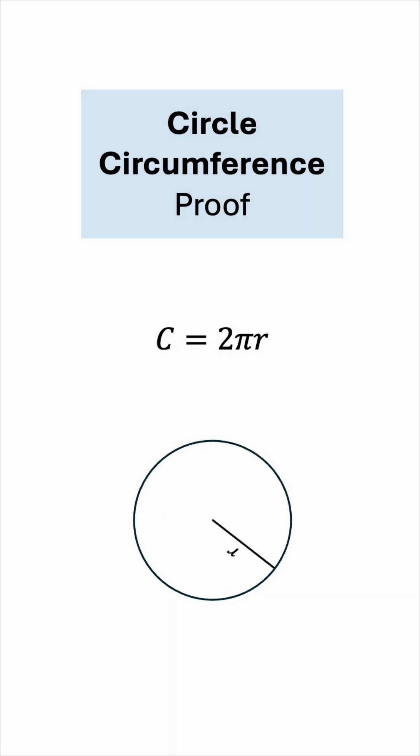We know that the circumference of any circle is pi times its diameter, or 2 pi r. Let's prove this.